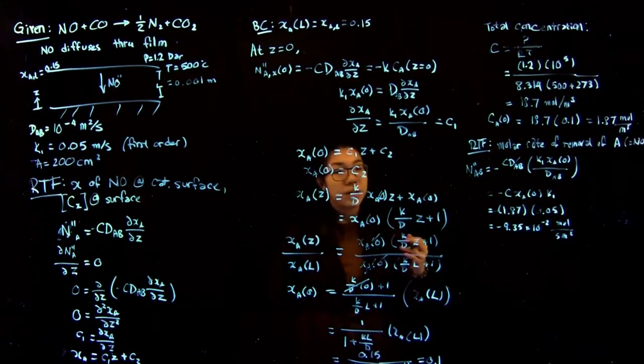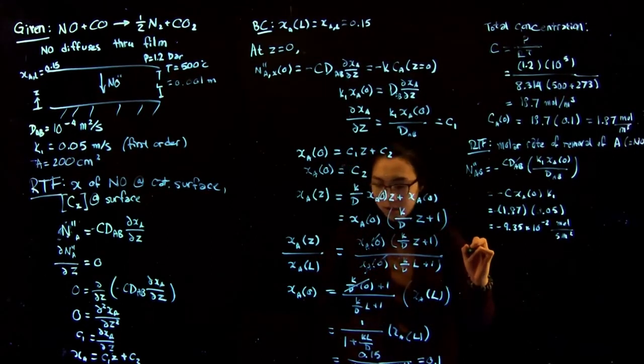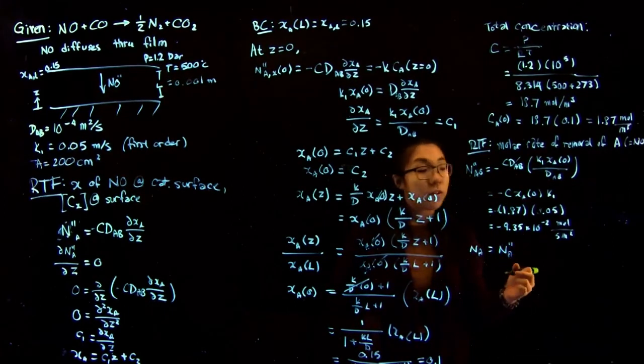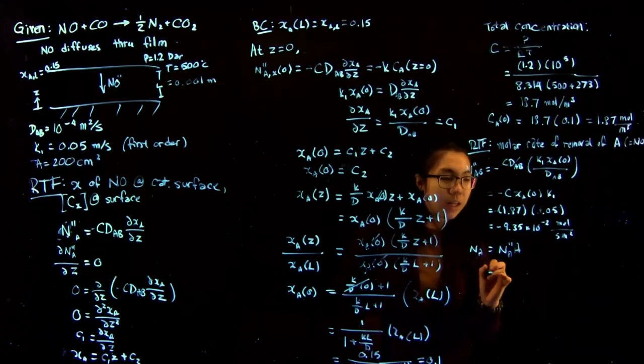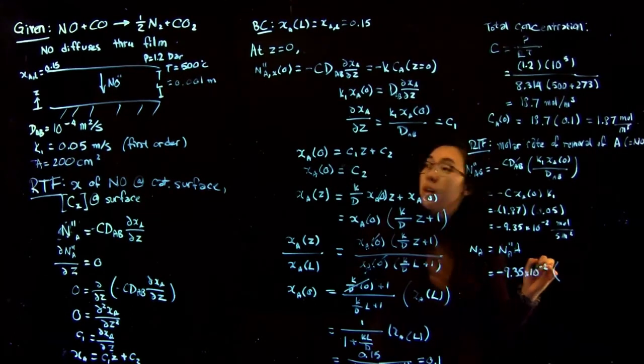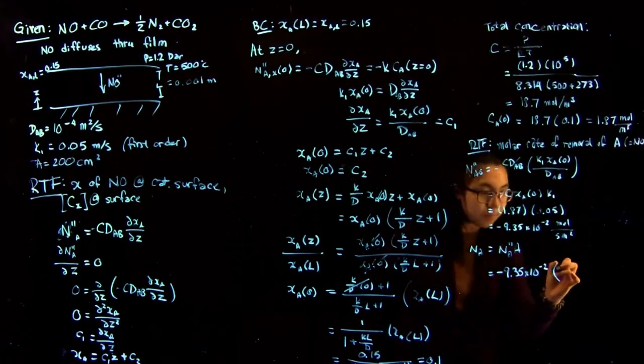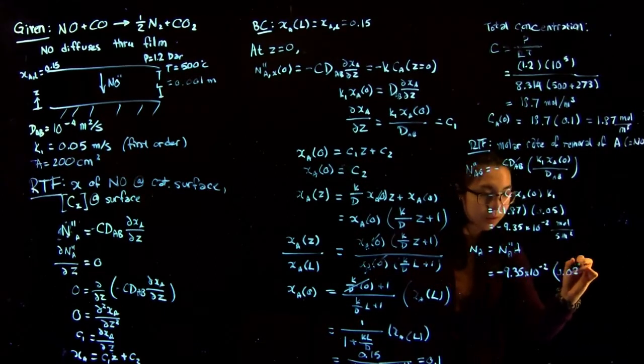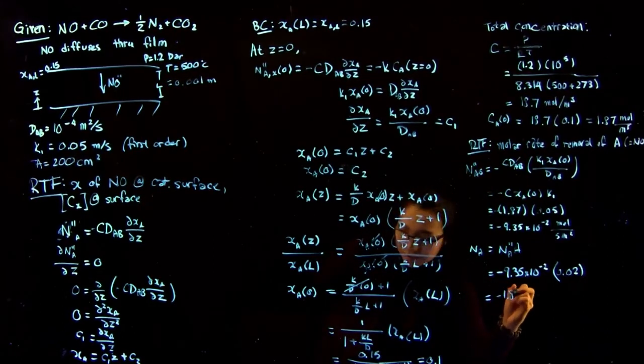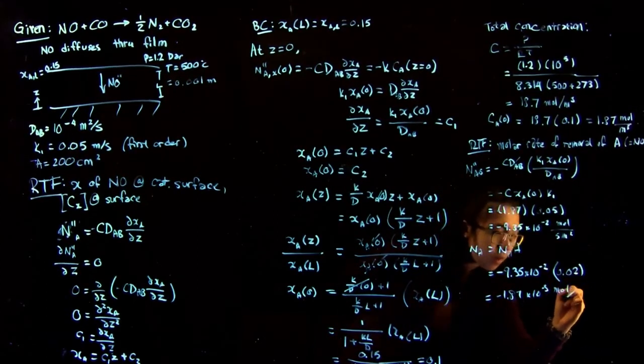The last thing we want to do, because we're finding the actual molar rate, is multiply this flux by the total area. So NA is equal to NA times the specific surface area times total area. That just gives minus 9.35 times 10 to the minus 2 times an area of 200 centimeters squared, giving us 0.02 meters squared, leaving us with the rate of removal of 1.87 times 10 to the minus 3 moles per second.